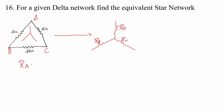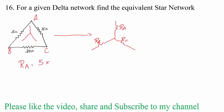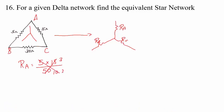The value of Ra is given by: Ra = (R_AB × R_AC) / (R_AB + R_AC + R_BC) = (5 × 15) / (5 + 15 + 30) = 75 / 50, which equals 1.5 ohms.